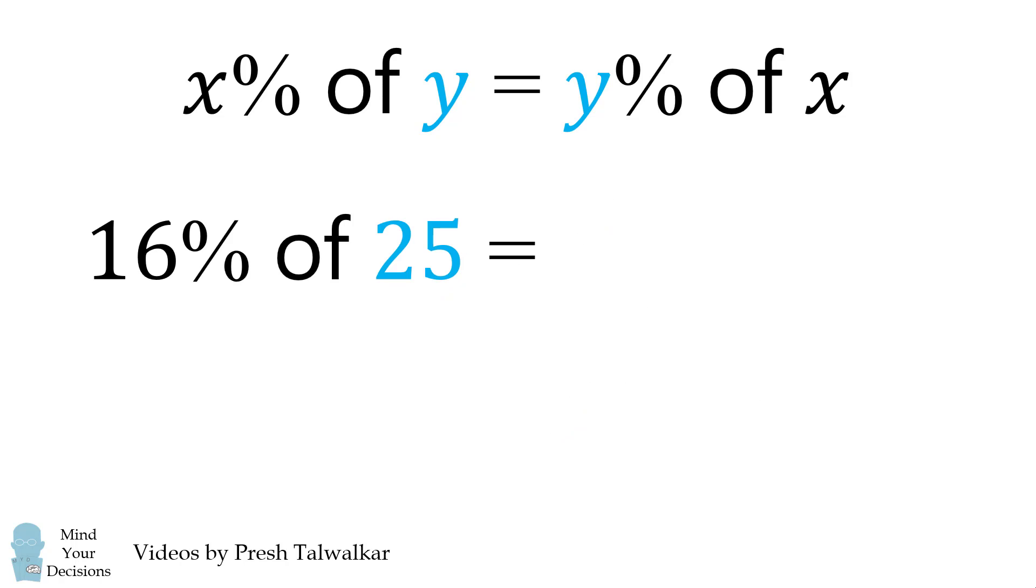Here's another example of using the trick. Let's say you wanted to calculate 16% of 25. What you instead do in your head is flip the two numbers, and you take 25% of 16, which is easier to do, and that's equal to 4. Therefore, 16% of 25 is also equal to 4.